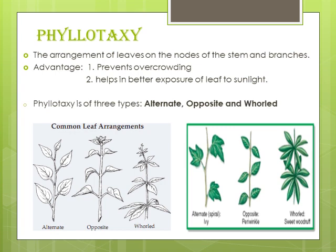In whorled phyllotaxy, at a particular node there are three or more leaves. Three or more leaves are borne at each node — that is actually known as whorled phyllotaxy, and it is seen in nerium. Some Bengali students might know it as korobi or korobi gach. So these are the different types of phyllotaxy.